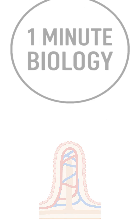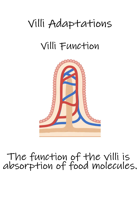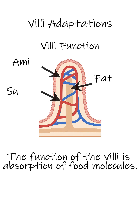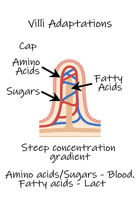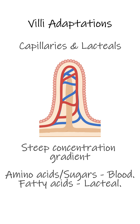Welcome back to One Minute Biology. Let's take a look at the adaptations of the villi. The role of the villi is the absorption of food molecules; they're found in the intestines. Villi maintain a steep concentration gradient between the nutrient molecules — amino acids and sugars — and the blood vessels, and fatty acids to the lacteals.